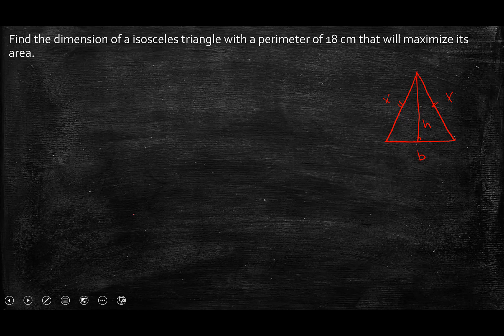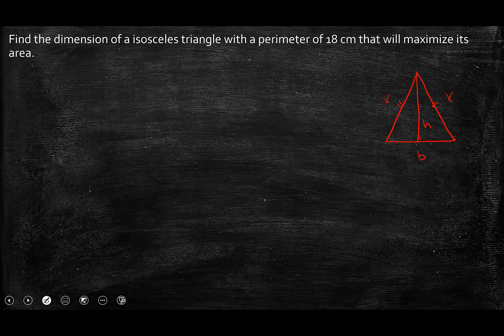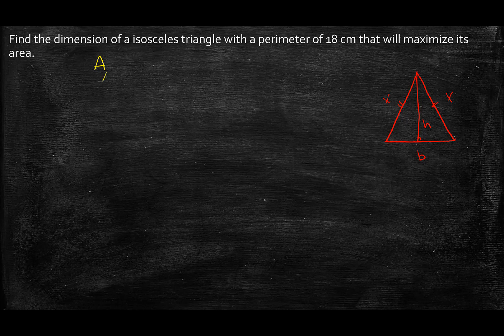Now the first thing is to find out what am I maximizing. I'm maximizing the area of this triangle. So let's write an equation for area. Area of the triangle is equal to half of base times the height. Now in order to take the derivative of this equation, I need to write this area in terms of only one variable so I can take the derivative and find the maximum. So I need to write either b in terms of h or h in terms of b.